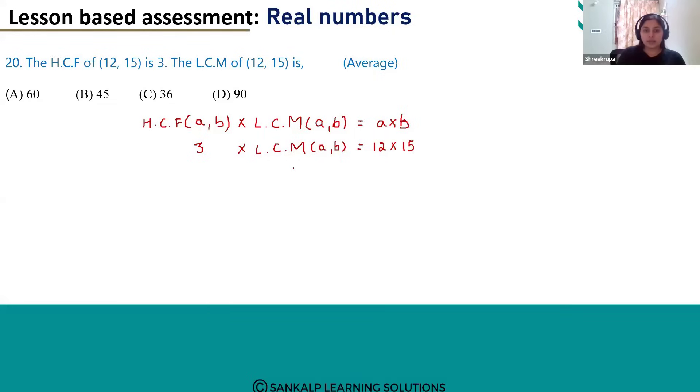So we have to shift this 3 to find out the value of LCM of A and B. 12 into 15 divided by 3. 3 ones are 3, 5s are 15, and 12 times 5 is 60. So the answer is option A, 60. Okay?